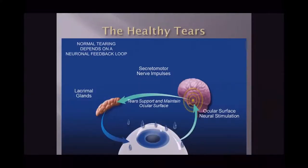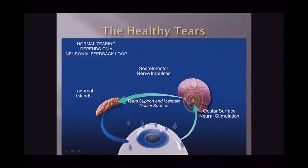Normal tearing depends on a neural feedback loop. Receptors send neural stimulation to the center of the ocular secretory gland, which sends secretomotor nerve impulses to the lacrimal gland to sustain and support tear production and maintain the ocular surface.